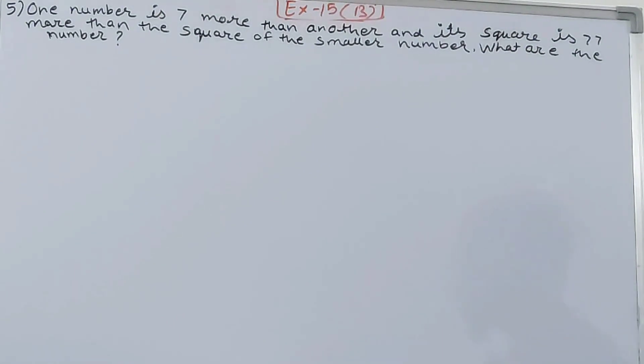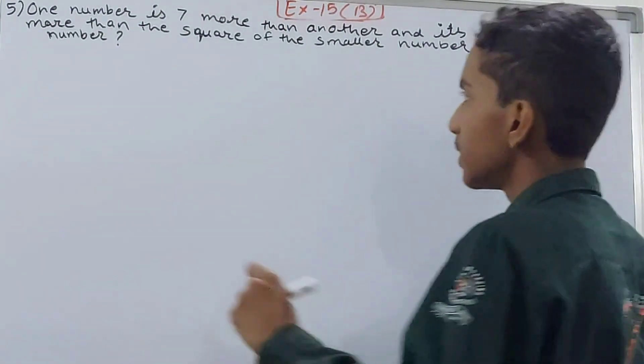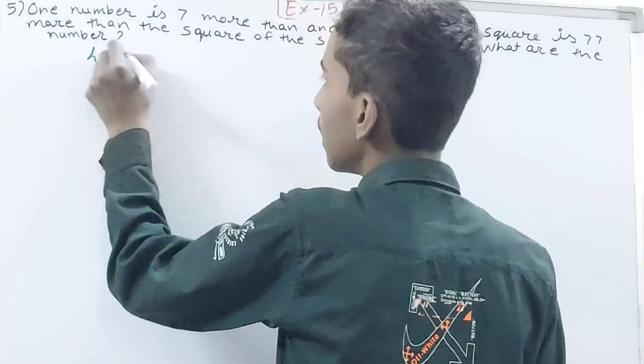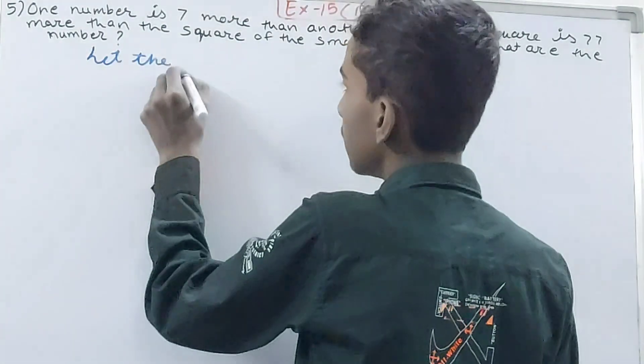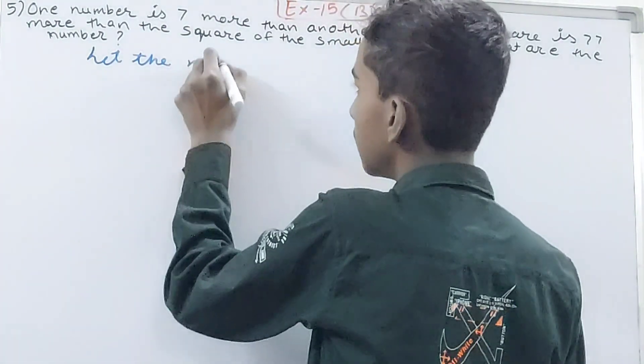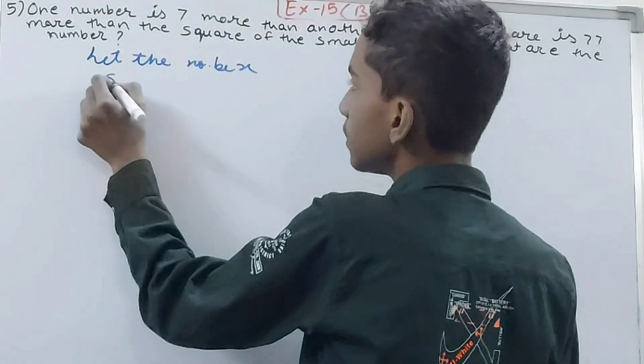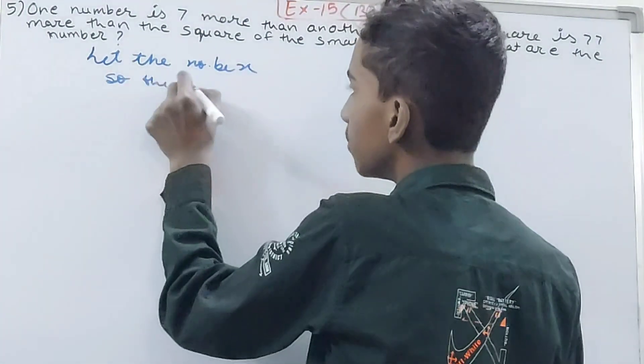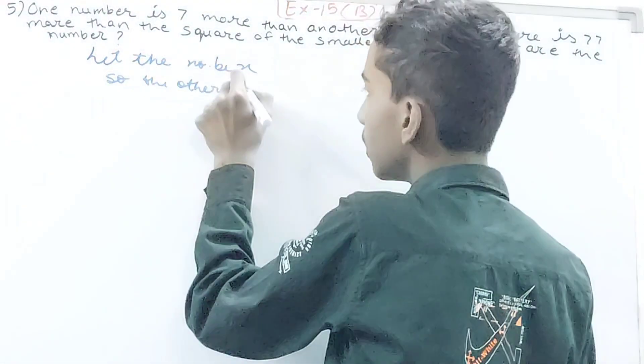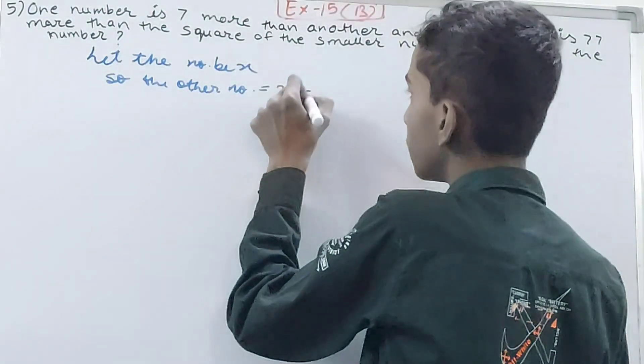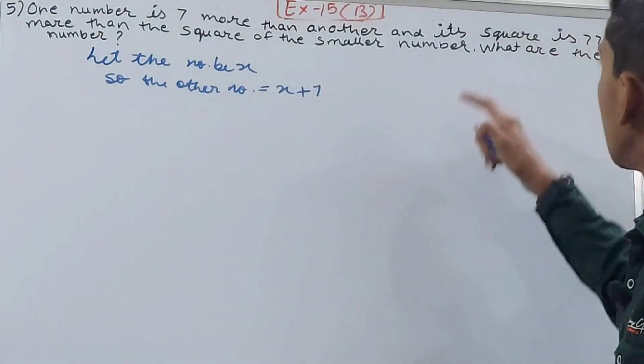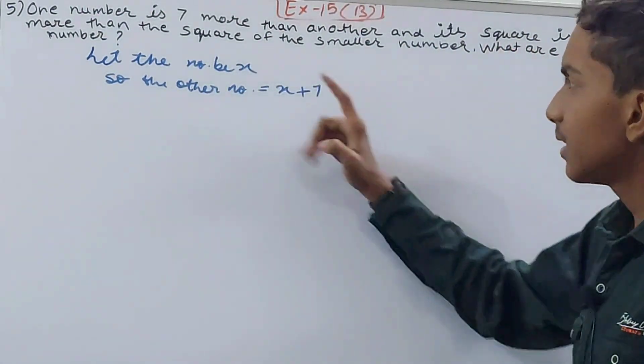One number is 7 more than the other number, so let the number be x. The other number is equal to x+7. And its square is 77 more than the square of the smaller number.